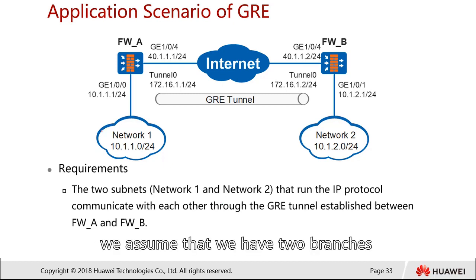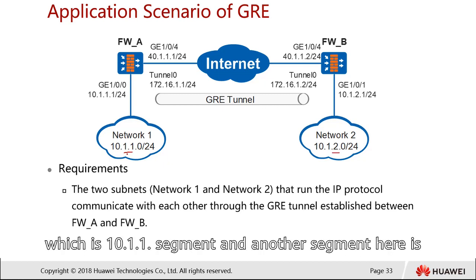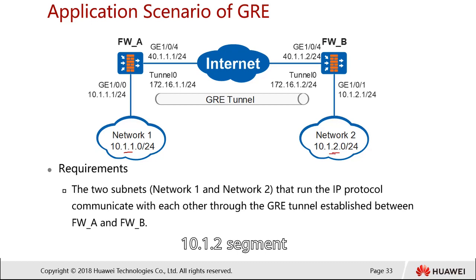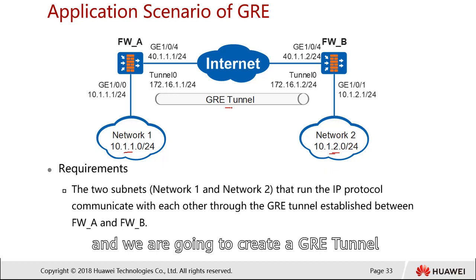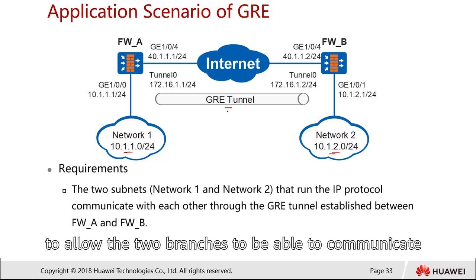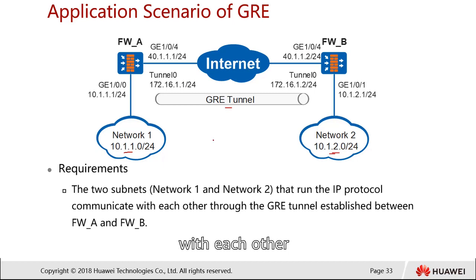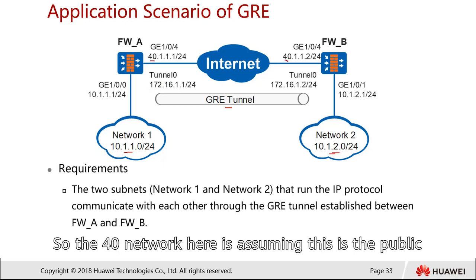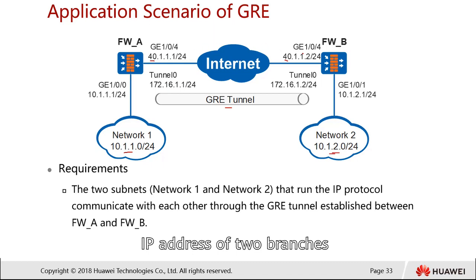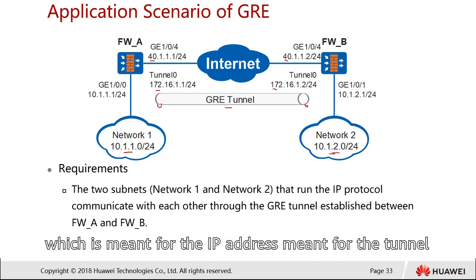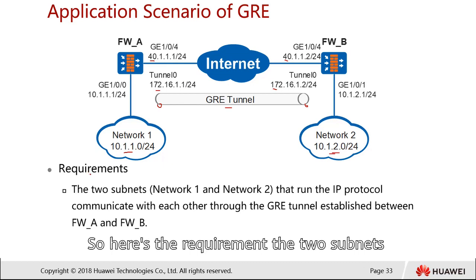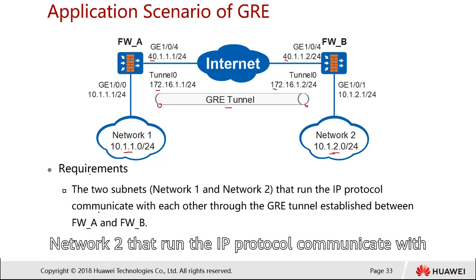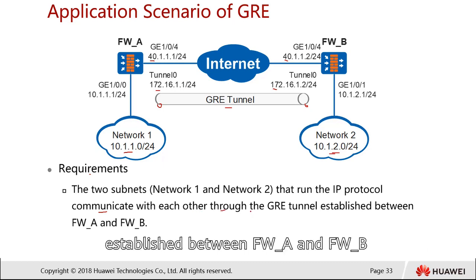That covers the client-initiated L2TP scenario. The second scenario is the GRE scenario. Here we assume two branches need to be connected. Network 1 uses the 10.1.1.x segment and Network 2 uses the 10.1.2.x segment. We create a GRE tunnel to allow the two branches to communicate. The public IP addresses of both branches are in the 40.x.x.x range, and the tunnel address is in the 172.16.x.x range.